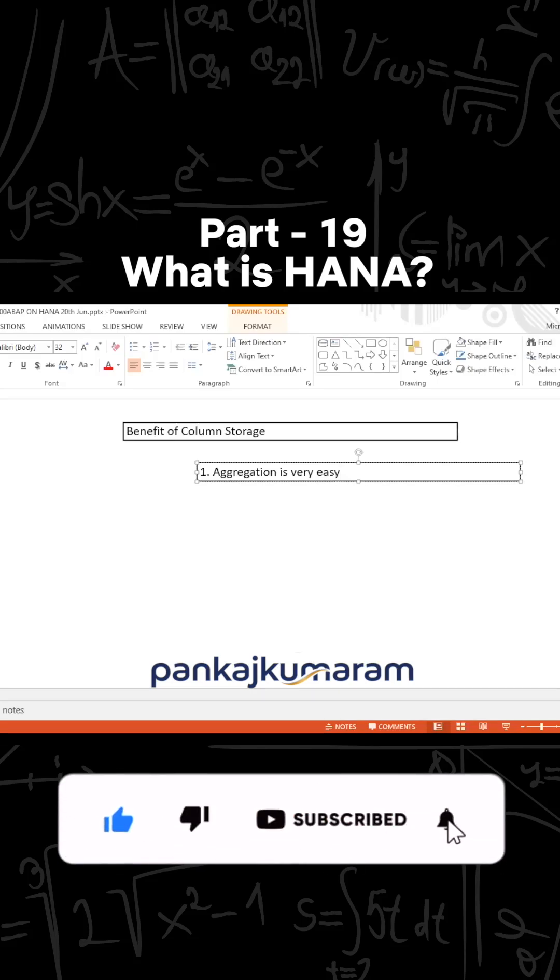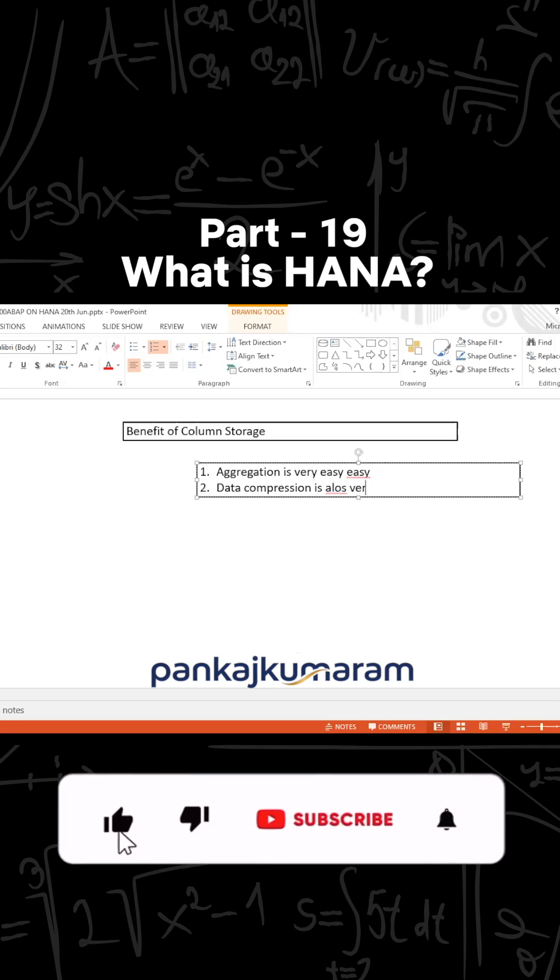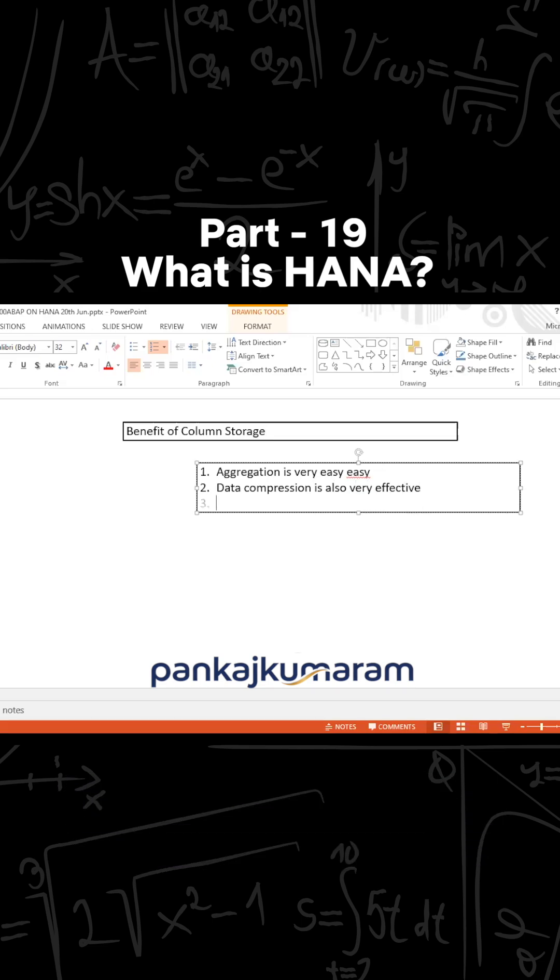to use aggregate functions like mean, max, sum, average, count, etc. Aggregation is very easy with the help of column storage. Data compression is also very effective. The third one is